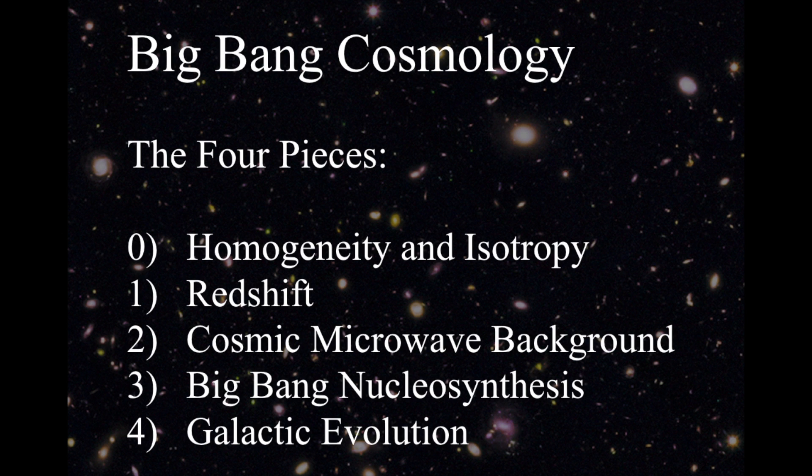The underlying assumption to everything is that the universe on the largest size scales is homogeneous and isotropic. Homogeneous means it doesn't matter where you go anywhere in the universe, you're going to have roughly the same stuff around you. And isotropic means that no matter where you go in the universe, you're going to see roughly the same things in every direction. Those are two different terms with different meanings.